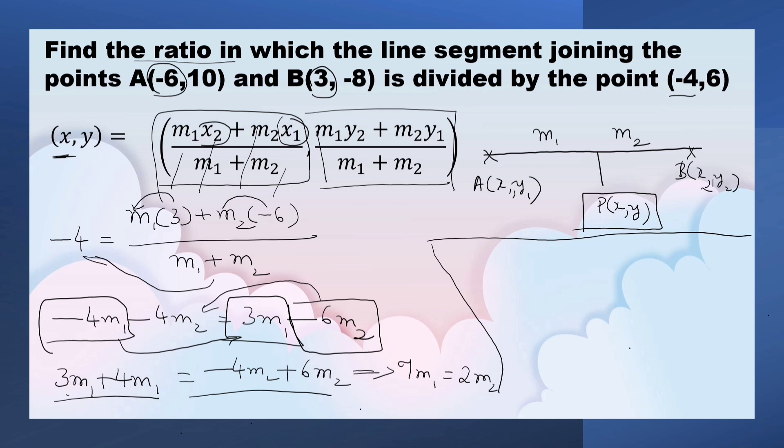So, M1 by M2, because we have to find the ratio, this is transposed to this side, is equal to 2, 7 is transposed to this side, 2 by 7. So, the ratio is 2 is to 7.